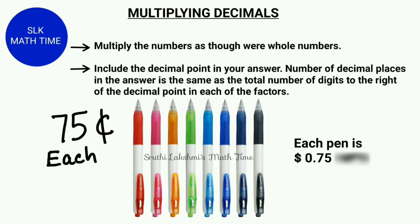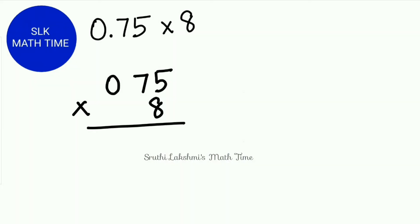Let's see an example. I want to buy 8 pens and each pen costs 75 cents. You could do 75 plus 75 plus 75 eight times, but instead we can multiply them. So let's multiply 0.75 by 8 as if they were whole numbers — let's ignore the decimal point for now.